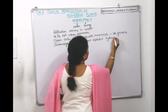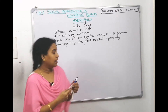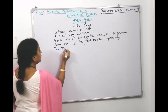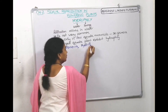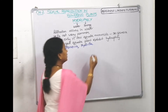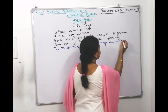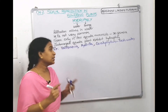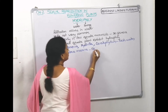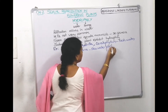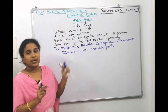Submerged aquatic plants exhibit hydrophily, which is called water pollination. Examples of hydrophily are Vallisneria, Hydrilla, and Ceratophyllum — these are freshwater plants. Whereas Zoostera marina is a marine water plant. So freshwater plants exhibiting hydrophily are Vallisneria, Hydrilla, and Ceratophyllum, while the marine water plant exhibiting hydrophily is Zoostera marina.